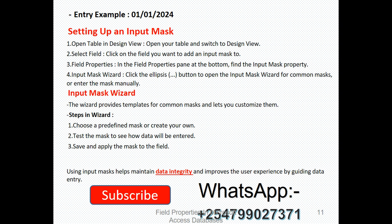Setting up an input mask: open the table in design view, open your table and switch to design view. Select the field by clicking on it. In the field properties pane at the bottom, find the input mask property. Click the ellipses, the three dots, to open the input mask wizard for common masks or enter the mask manually. The wizard provides templates for common masks and lets you customize them. Steps in the wizard: choose the predefined mask or create your own, test the mask to see how data will be entered, save and apply the mask to the field.